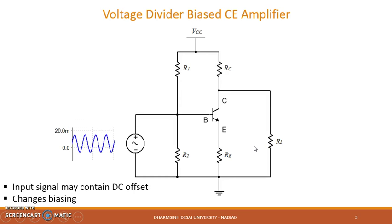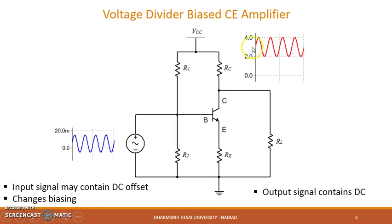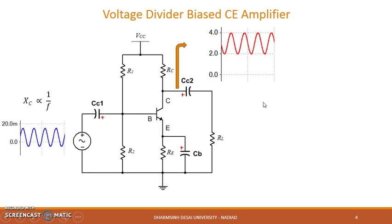It may be possible that your input signal contains some DC offset, due to which biasing of the transistor may get changed. Another thing is that at the output side, the amplified AC voltage will ride on a constant DC voltage, which is undesirable in the case of amplification. To solve this problem, capacitors are inserted.